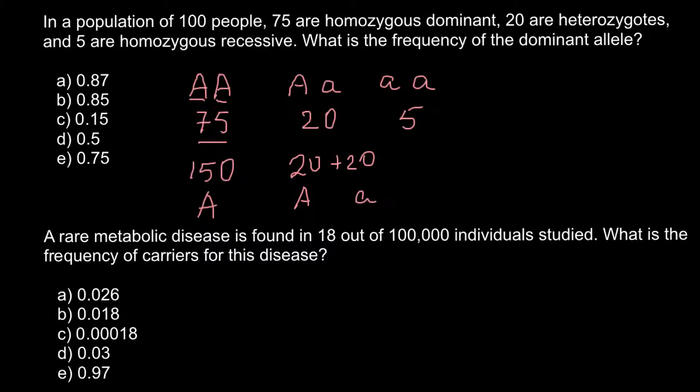And as for the homozygous recessive, we would have 5 people. So together these 5 people would have 10 alleles, that is small a. So the question is how many dominant alleles. So we have to combine these two numbers.